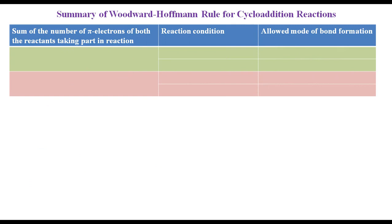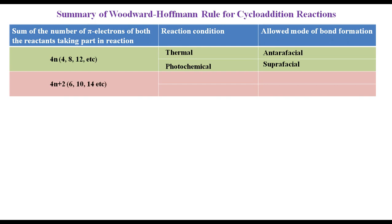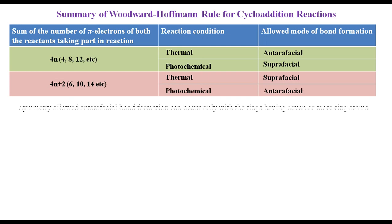Based on the previous discussion, we can summarize the Woodward-Hoffmann rule for cycloaddition reactions in tabulated form. If the total number of pi electrons of both reactants is 4N (i.e., 4, 8, 12, etc.), under thermal conditions the allowed mode of bond formation is antarafacial, while under photochemical conditions it is suprafacial. If the total number of pi electrons is 4N+2 (i.e., 6, 10, 14, etc.), under thermal conditions the allowed mode is suprafacial, while under photochemical conditions it is antarafacial. Even though antarafacial bond formation is symmetry-allowed in certain cases, it can occur only in rings that have 7 or more ring atoms.